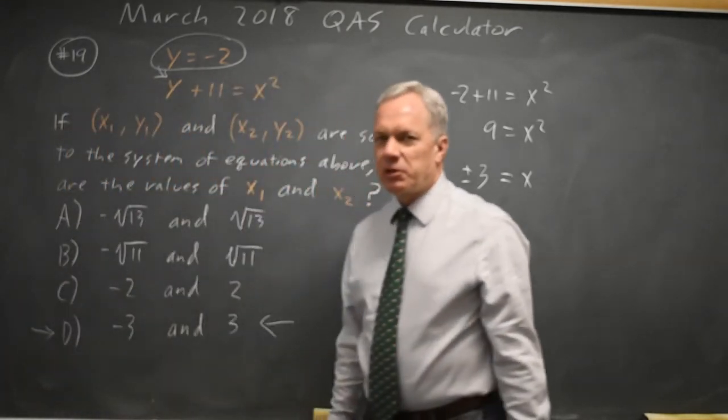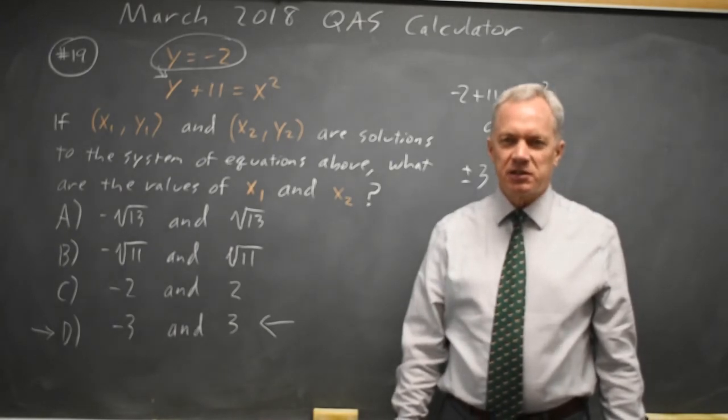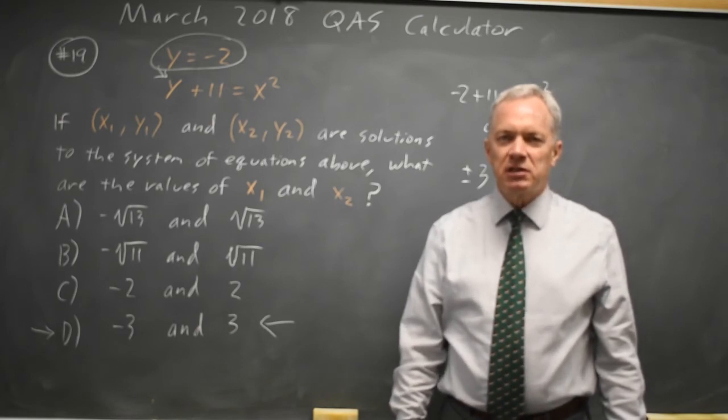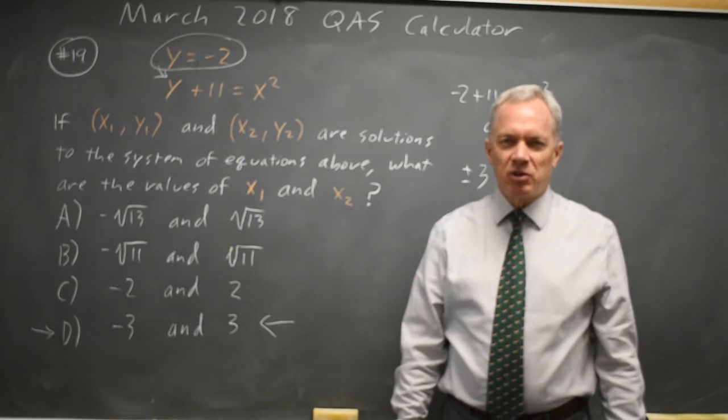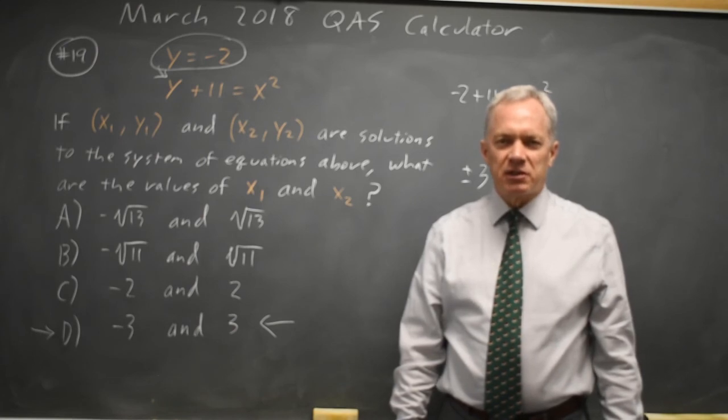College Board will typically give you one nonlinear system of equations in addition to several linear systems of equations or inequalities, and they will typically give you at least one problem where you need to know that the square root symbol only means the positive square root, but that x squared would be either positive or negative the square root.